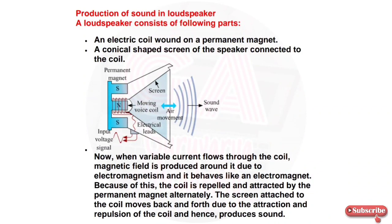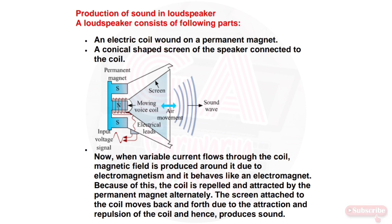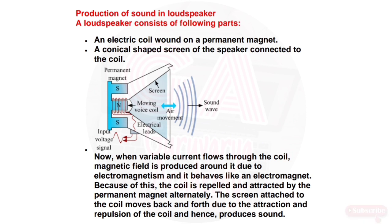A loudspeaker consists of the following parts: an electric coil wound on a permanent magnet, and a conical-shaped screen connected to the coil. When variable current flows through the coil, a magnetic field is produced around it due to electromagnetism and it behaves like an electromagnet. Because of this, the coil is alternately repelled and attracted by the permanent magnet. The screen attached to the coil moves back and forth due to this attraction and repulsion, and hence produces sound.